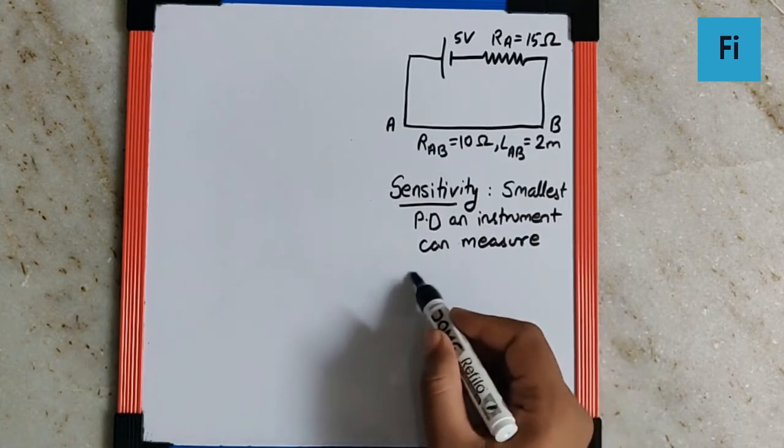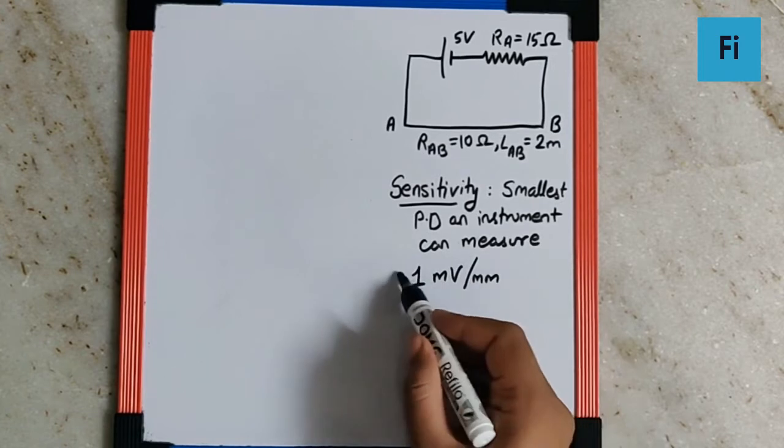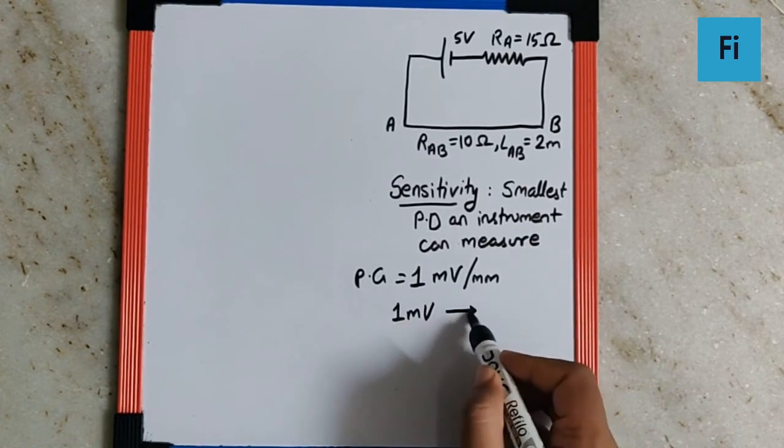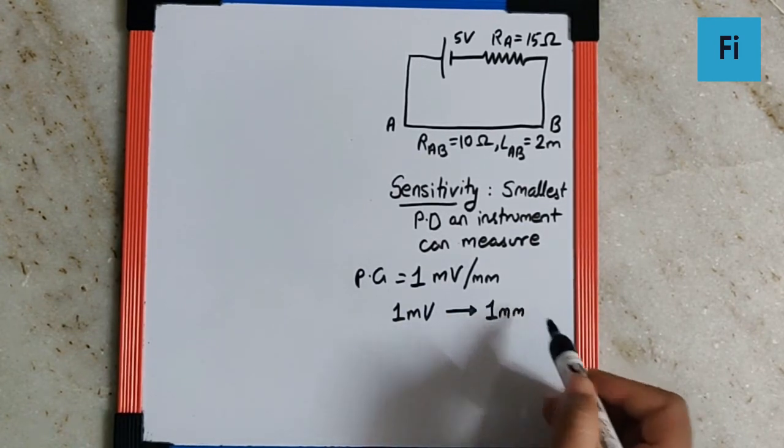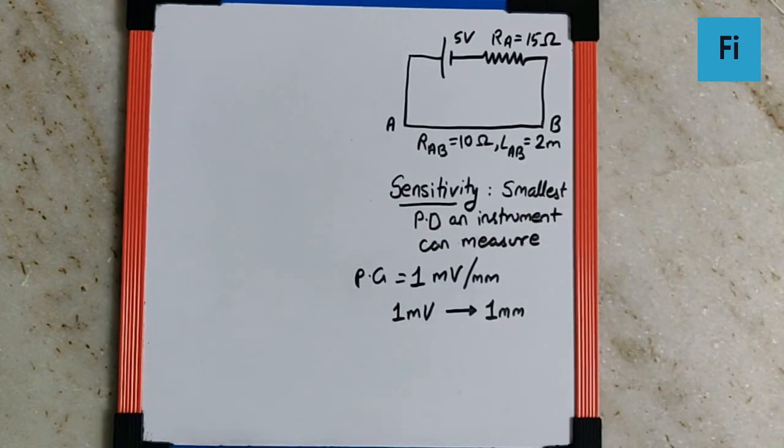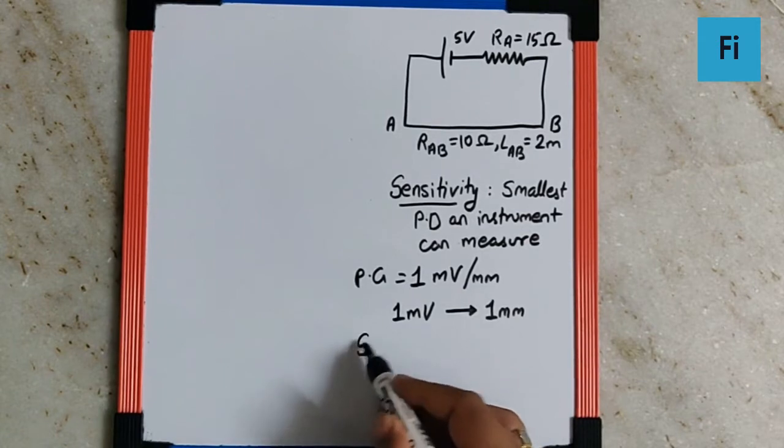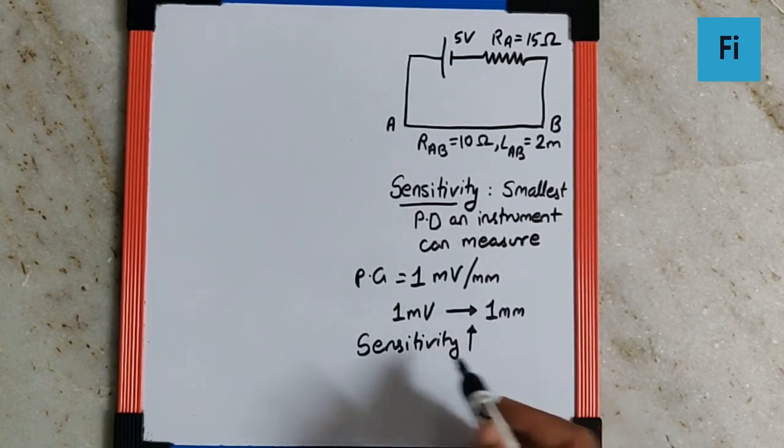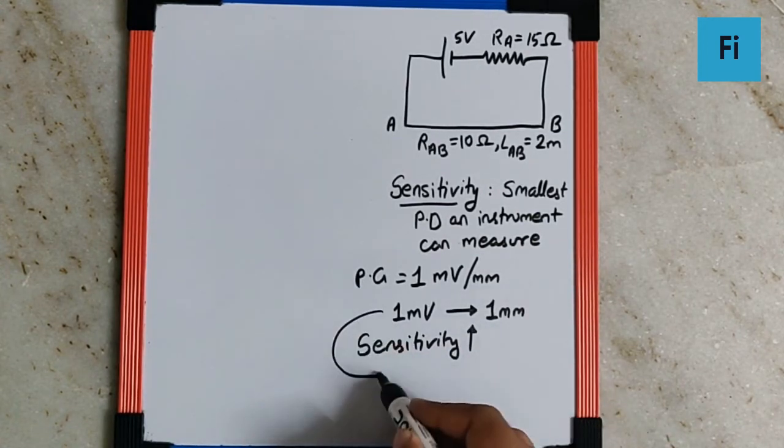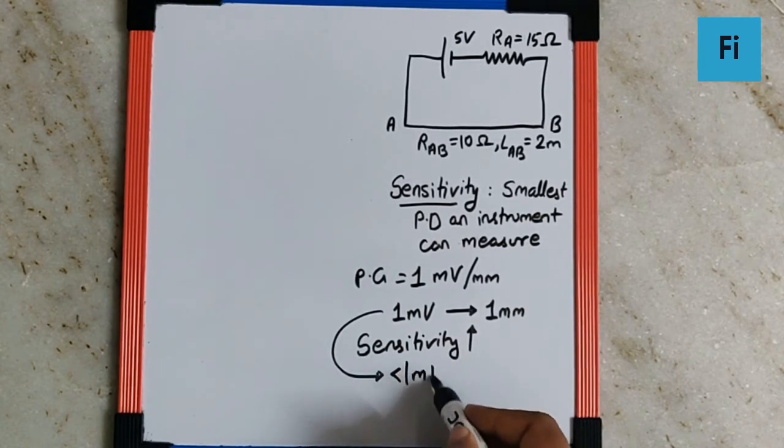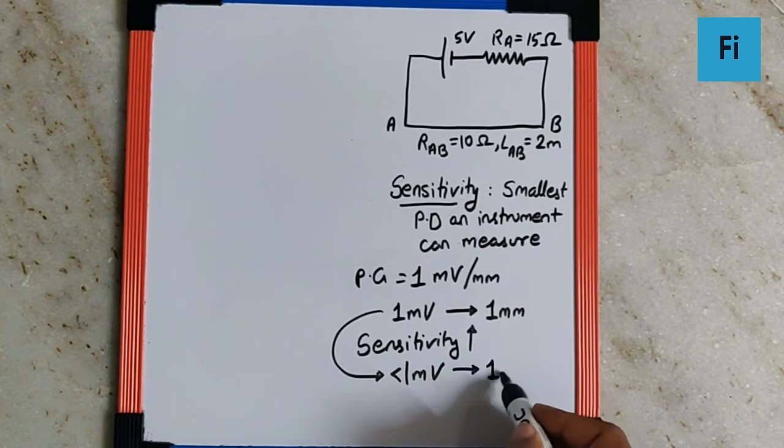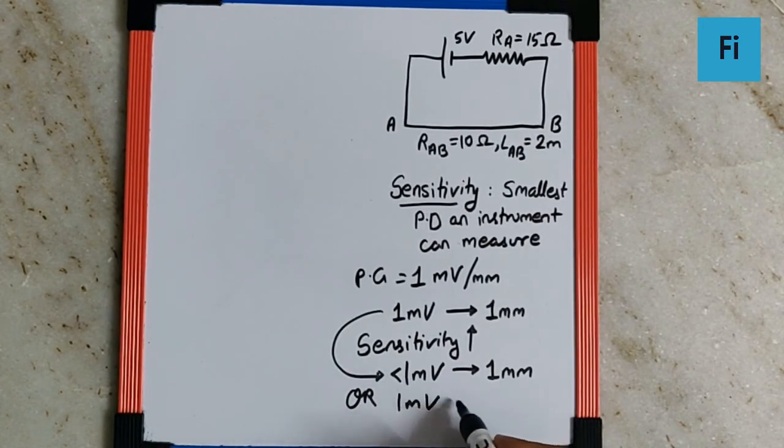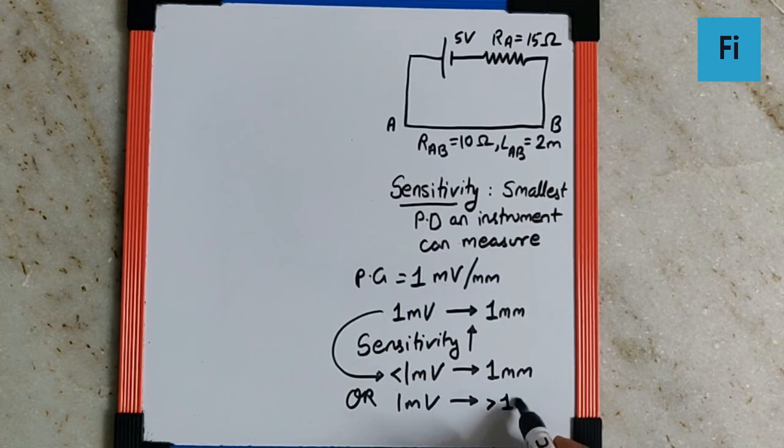When I say 1 millivolt per millimeter is the potential gradient, what I mean is 1 millivolt can be measured at a linear marking of 1 millimeter by this particular potentiometer. So when I want to increase the sensitivity then I would say I would like to have smaller than 1 millivolt to be measured in the same length, or have the same millivolt measurement for a greater than 1 millimeter length.